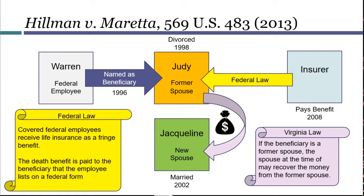Judy is in an undesirable situation, but it's not an impossible situation where she is forced to either break one law or the other. And the same goes for Jacqueline — if she uses state law to get money from Judy, she is not herself violating any federal law. By and large, impossibility preemption is fairly rare.